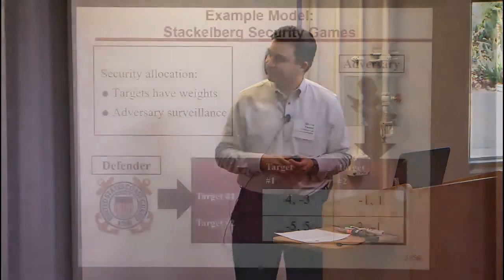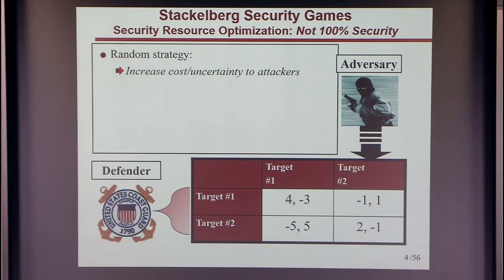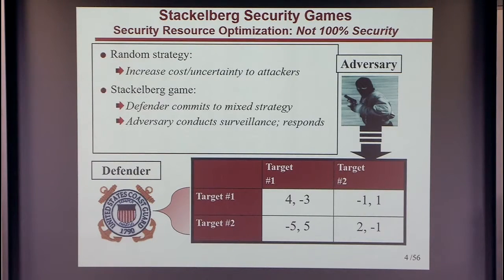For those unfamiliar with the model, here is a small two-by-two example of the US Coast Guard protecting a port with two targets, where target one is more important. If the Coast Guard commits to a pure strategy — always protecting one target — the adversary can exploit that. But if the Coast Guard commits to a mixed strategy, say 60% of the time at target one and 40% at target two, an adversary conducting surveillance will know the probabilities but not what will happen tomorrow, making their plan of attack uncertain.